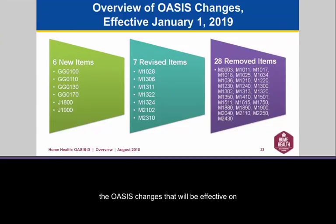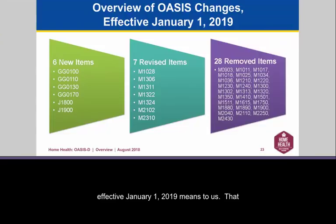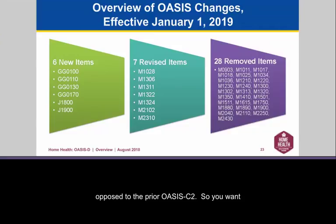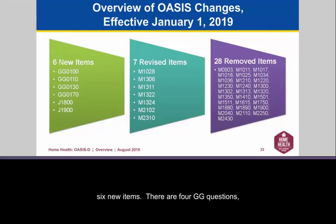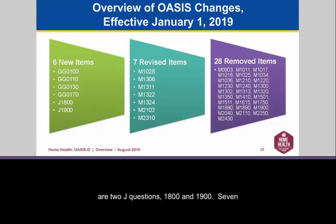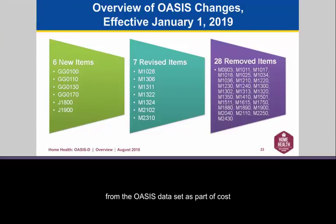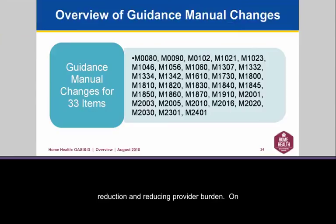Let's take a look at an overview of the OASIS changes that will be effective on January 1, 2019. This means you will use the SOC or ROC date to determine when to use the OASIS-D as opposed to the prior OASIS-C2. The changes include six new items: four GG questions — GG0100, GG0110, GG0130, GG0170 — and two J questions, J1800 and J1900. Seven of the existing elements have been revised, and twenty-eight have been removed from the OASIS dataset as part of cost reduction and reducing provider burden.